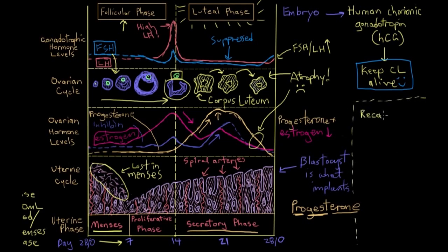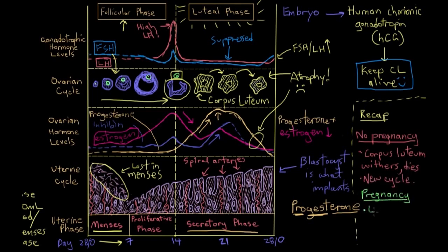Just to recap, if no pregnancy occurs, then the corpus luteum withers away and the reproductive cycle just continues to repeat itself about every 28 days. If pregnancy does occur, the implanted embryo starts to produce HCG, which rescues the corpus luteum from atrophying and the endometrium is thus maintained. So no menstruation happens because you're not losing the endometrium, and the reproductive cycle is put on hold for the duration of the pregnancy.